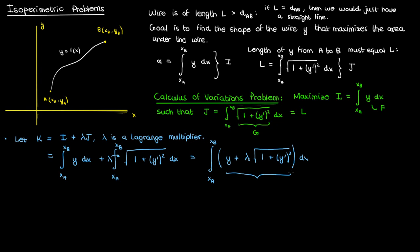Now that we've got our combined functional what I'll do is apply the Euler Lagrange equation to the expression that's being integrated which is really just f plus lambda g. The Euler Lagrange equation by the way would then be given by the partial with respect to y of f plus lambda g minus the derivative with respect to x of the partial with respect to y prime of f plus lambda g and that all equals 0.